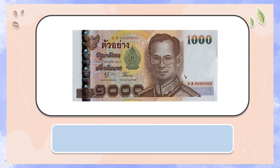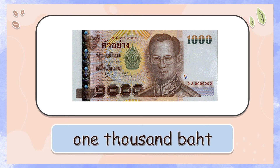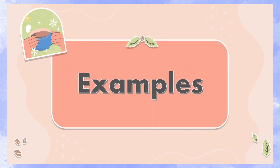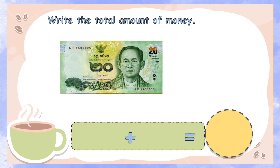500 baht — it is purple in color. 1000 baht — it is brown in color. Here are some example problems in our lesson: write the total amount of money.